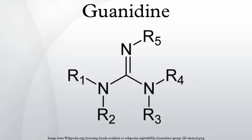Guanidine is protonated in physiological conditions. This conjugate acid is called the guanidinium cation, CH6N3+. It is a highly stable +1 cation in aqueous solution due to the efficient resonance stabilization of the charge and efficient solvation by water molecules. As a result, its pKa is 13.6, meaning that guanidine is a very strong base in water.